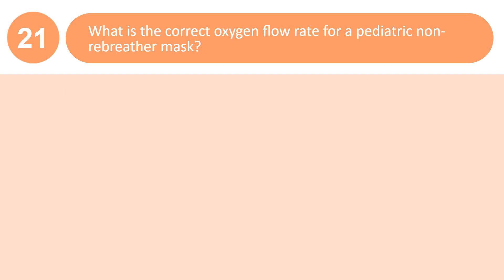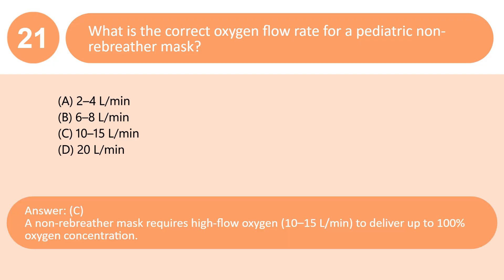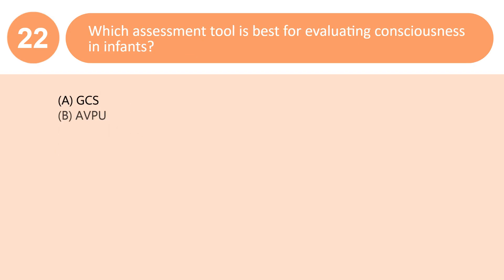What is the correct oxygen flow rate for a pediatric non-rebreather mask? A. 2–4 L/min. B. 6–8 L/min. C. 10–15 L/min. D. 20 L/min. Answer: C. A non-rebreather mask requires high-flow oxygen, 10 to 15 liters per minute, to deliver up to 100% oxygen concentration.